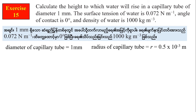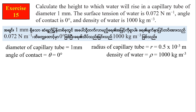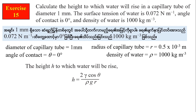The radius of the capillary tube is 0.5 × 10⁻³ meters. The angle of contact is 0 degrees, so cos θ = cos 0° = 1. The density of water is 1000 kg per cubic meter.